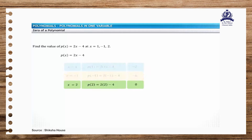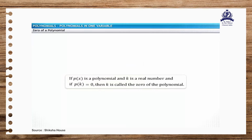In this example, the value of the polynomial is 0 when x is equal to 2. Therefore, 2 is the zero of the polynomial p of x equal to 2x minus 4. In general terms, if p of x is a polynomial and k is a real number, and if p of k is equal to 0, then k is called the zero of the polynomial.